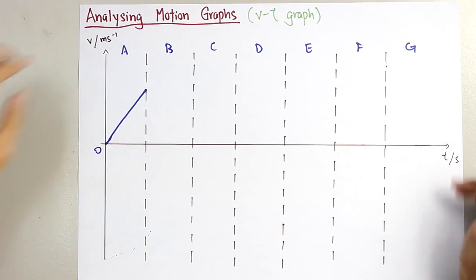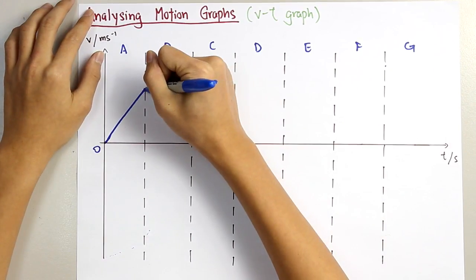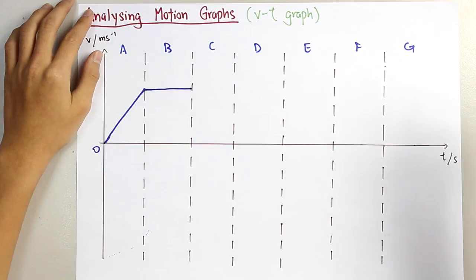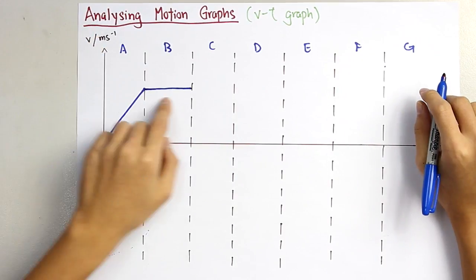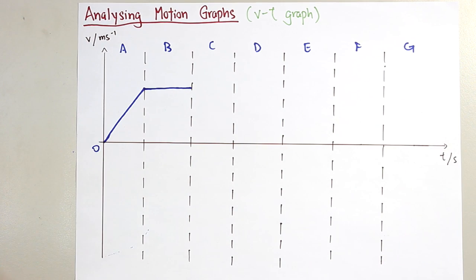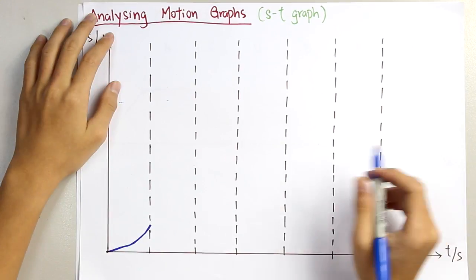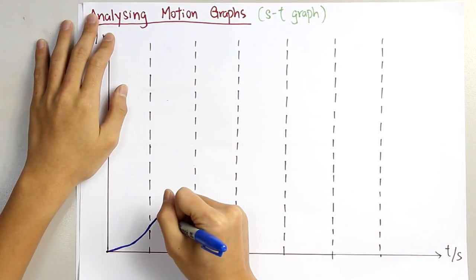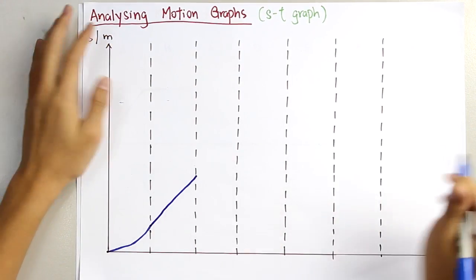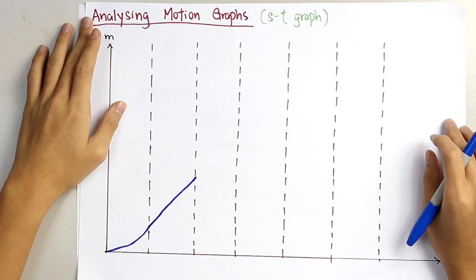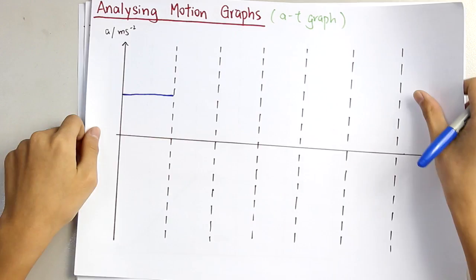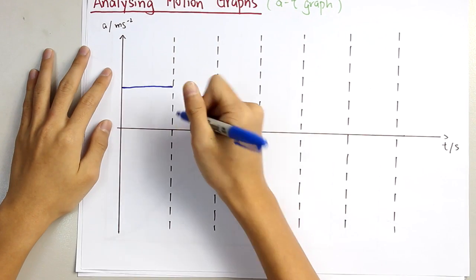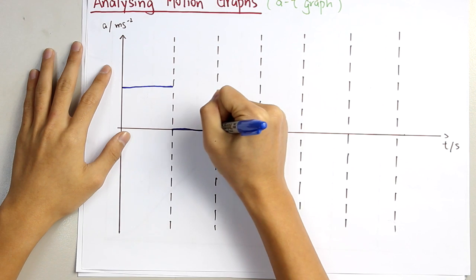So back to the VT graph. We are given this horizontal straight line, which shows that it has constant velocity. So for constant velocity, the gradient for the ST graph will be constant, so it will be a straight line. And for the AT graph, since it was constant velocity, there will be zero acceleration.